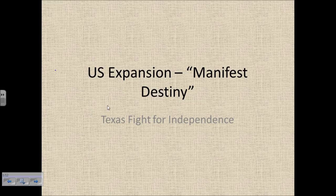I also want to direct you back to the notes on Jacksonian democracy and make sure that you look at John C. Calhoun, the nullification crisis, up to the election of William Henry Harrison. You will be responsible for those notes. All right, so let's get going.